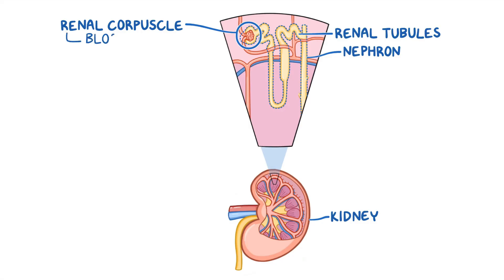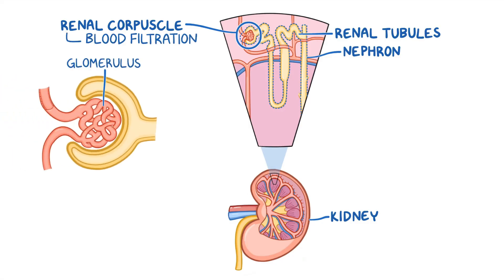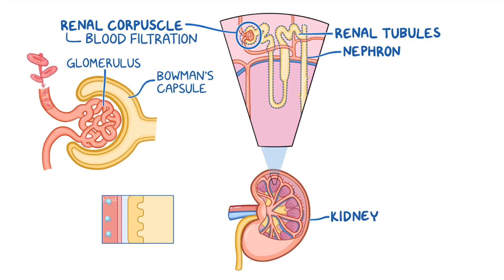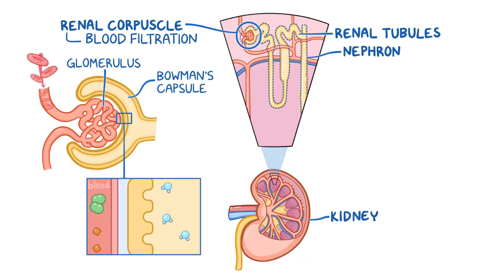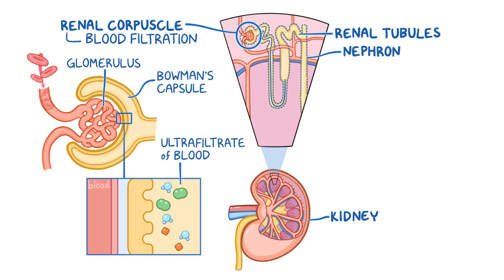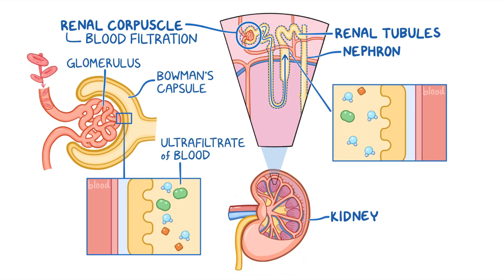The renal corpuscle is where blood filtration happens, and it's made up of the glomerulus, which is a tiny bundle of capillaries, and the Bowman's capsule, which is a cup-shaped structure surrounding the glomerulus. Blood flows through the glomerulus, and then water and small solutes are filtered into Bowman's capsule, creating an ultrafiltrate of blood. This ultrafiltrate then goes through the renal tubules, where electrolytes and water can be secreted or reabsorbed.